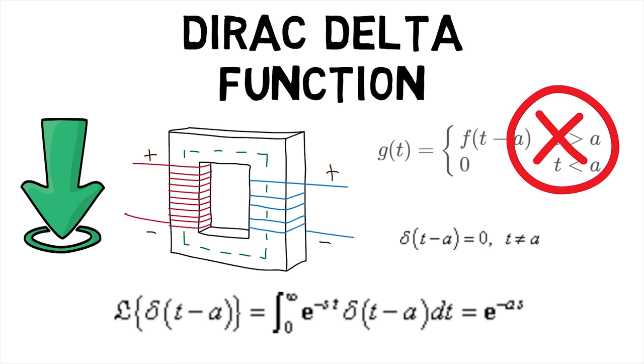So the Laplace transform of δ(t - a) is given by integral of e^(-st) times δ(t - a) dt from zero to infinity, equal to e^(-as), provided a is greater than zero.